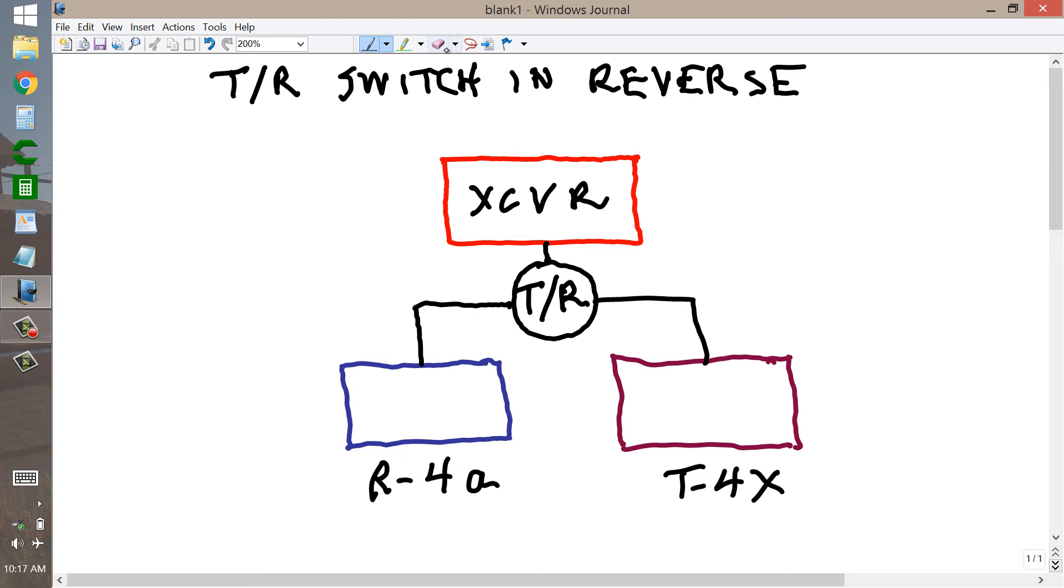And then, instead of the receiver and the transmitter being separate, you have a separate transmitting antenna, such as the vertical I already have. And a receiving antenna.